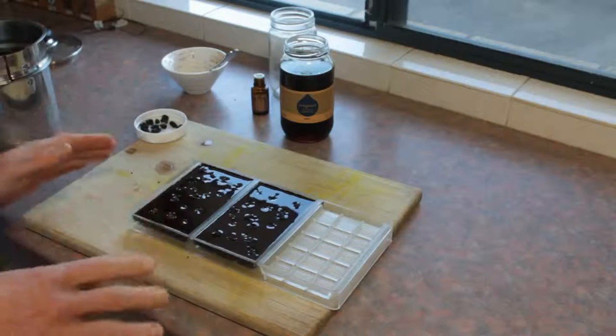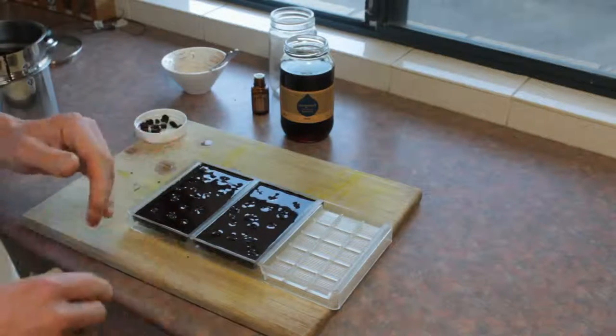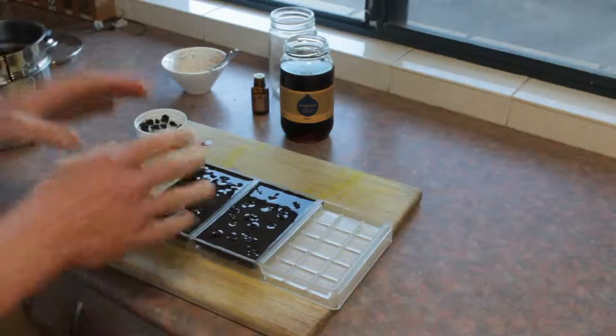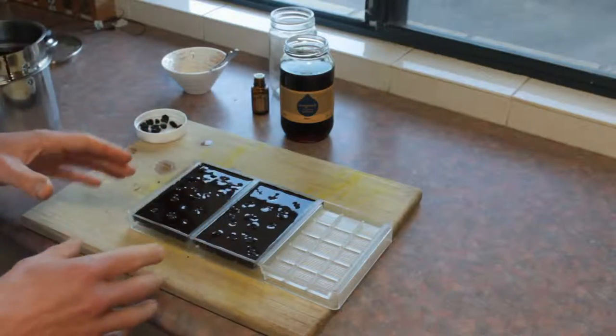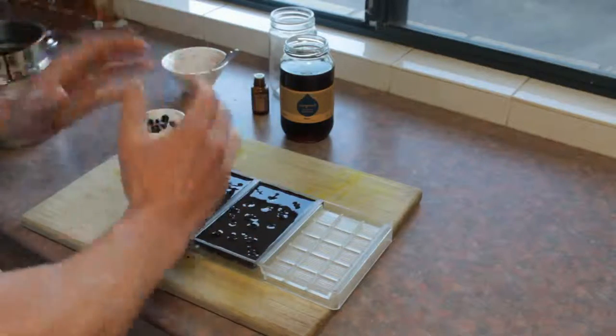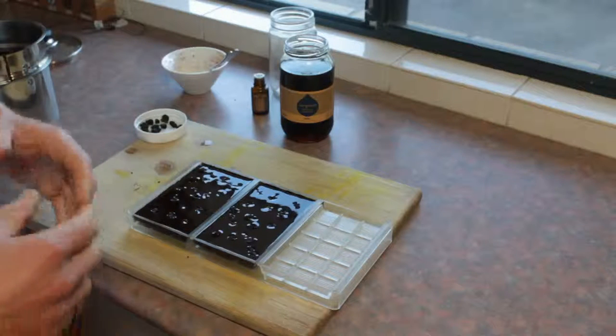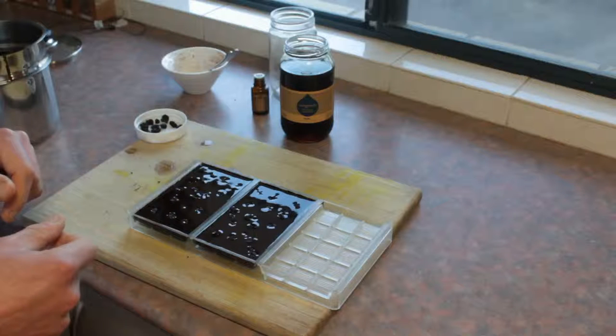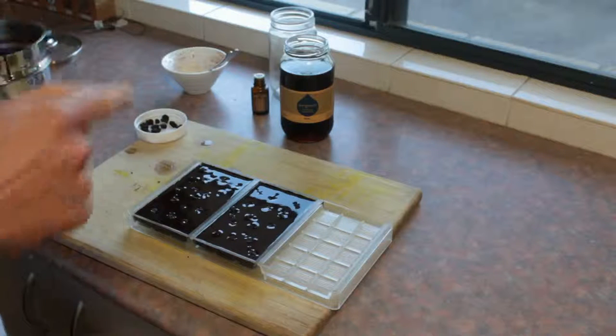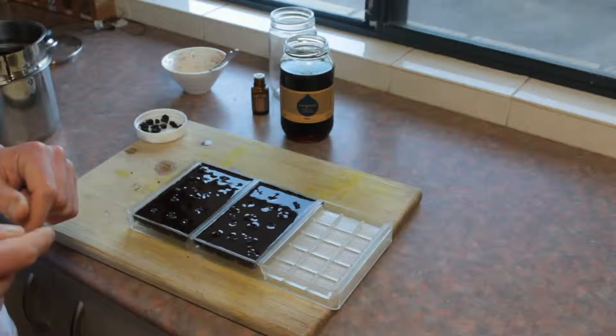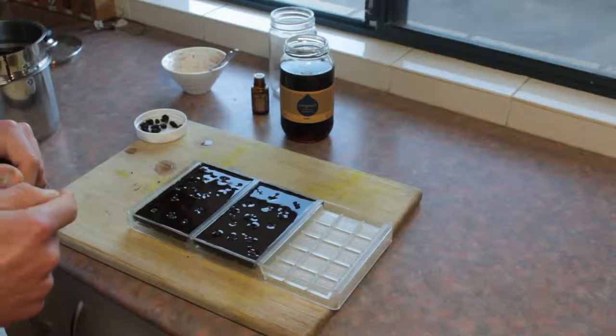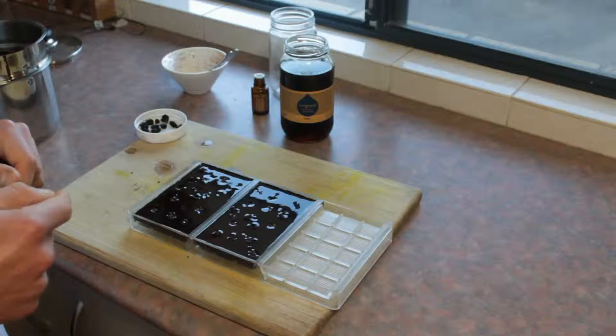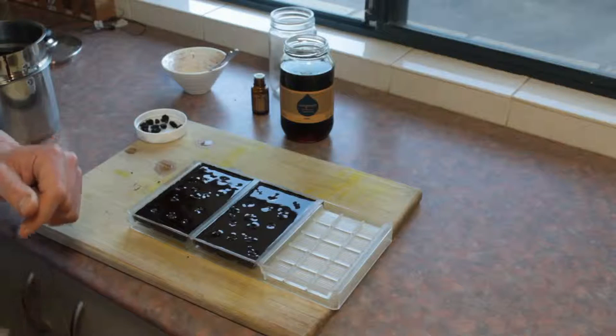Now, all you have to do now is put this in the freezer for say half an hour and then they're set. And then you just give it a little whack on your chopping board and then they pop out. But I give it a good half an hour and then they're ready to eat. Certainly worth trying if you're a chocolate fanatic like myself. Hope you've enjoyed the video. Thanks for watching.